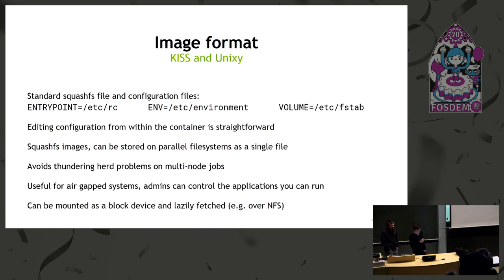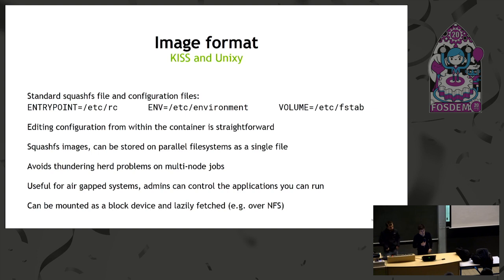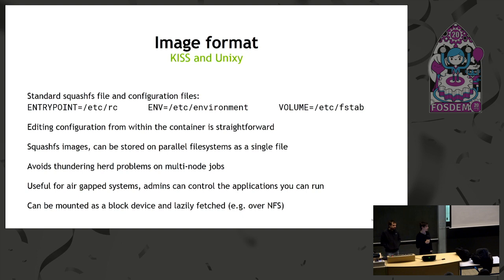For the image format we chose squashFS and wanted it to be super simple. When we convert a Docker image, the entry point becomes /etc/rc, the environment goes to /etc/environment, and volumes go to /etc/fstab. When you land in the container you can edit these config files and restart the container — it gets picked up. SquashFS images can be stored as a single file on the parallel filesystem and pulled really fast internally, avoiding the thundering herd problem when a multi-node job starts pulling the image a hundred times simultaneously. It's also useful for air-gapped clusters where the admin controls what can run.